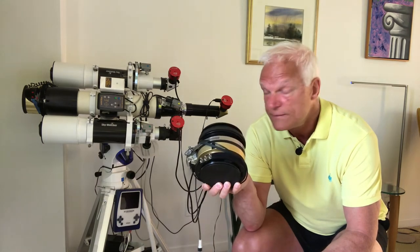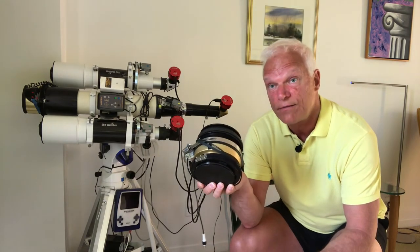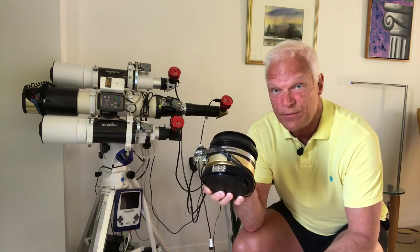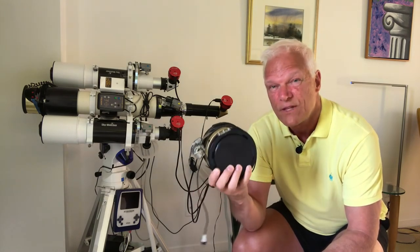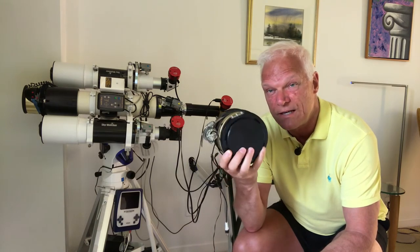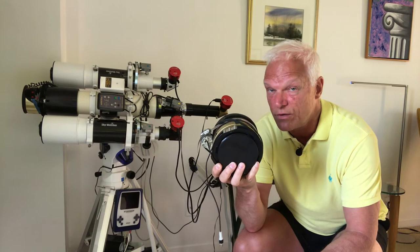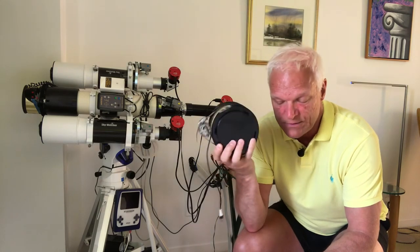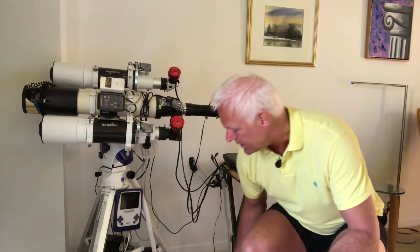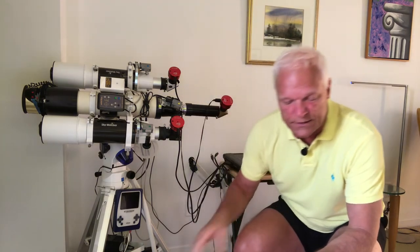Number two: I bought a second etalon, a Fabry-Perot etalon. This is a used etalon, 90 millimeter hydrogen alpha to double stack with the one I already have at the end of the center telescope. This is work in progress, I'm having a bit of a problem finding the best combination and I'm not sure it's required with electronic cameras.